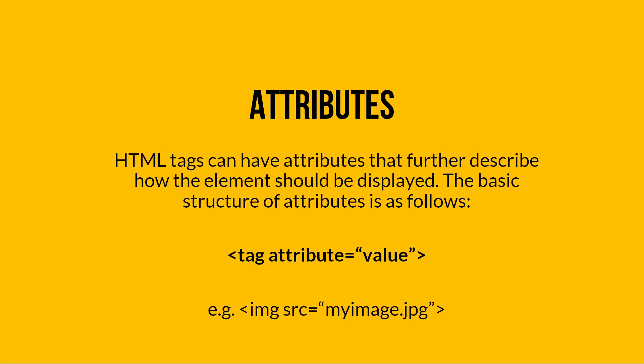So let's talk about attributes. HTML tags can have attributes that further describe how the element should be displayed. The basic structure of attributes is as follows: you have the name of the tag, then a space, then the name of the attribute, an equal sign, and then double or single quotes containing the value of that attribute.